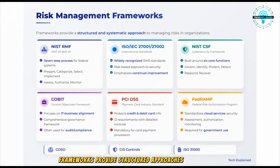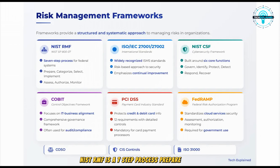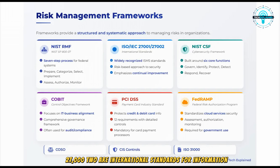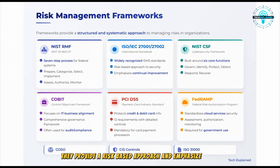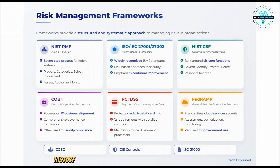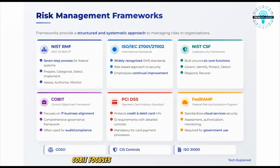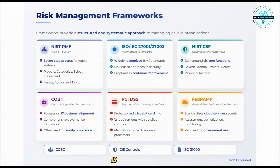Frameworks provide structured approaches to managing risk, and there are several you should know for the exam. NIST RMF is a seven-step process: prepare, categorize, select, implement, assess, authorize, and monitor — widely used in government agencies. ISO/IEC 27001 and 27002 are international standards for information security management systems, emphasizing a risk-based approach and continual improvement. NIST CSF is built around six core functions: identify, protect, detect, respond, recover, and the later-added govern — very popular in the private sector. COBIT focuses on aligning IT and business strategies, PCI DSS is specific to payment card security, and FedRAMP is for cloud services used by the government.